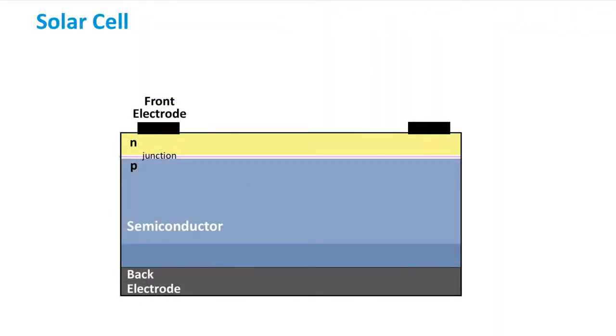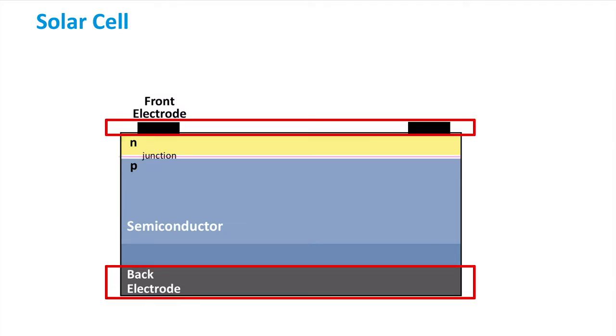We will use the shown solar cell to visualize the photovoltaic effect. This is a basic crystalline silicon solar cell, with an N-doped silicon layer, a P-doped silicon layer, and back and front electrodes.